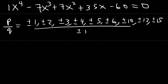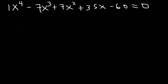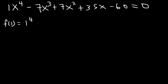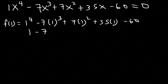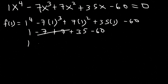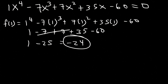Let's start with 1 — let's see if f of 1 is equal to 0. That's 1 to the fourth power minus 7 times 1 cubed plus 7 times 1 squared plus 35 times 1 minus 60, which gives us 1 minus 7 plus 7 plus 35 minus 60. Negative 7 plus 7 is 0, and 35 minus 60 is negative 25, so the total is negative 24. That's not equal to 0, so this doesn't work.